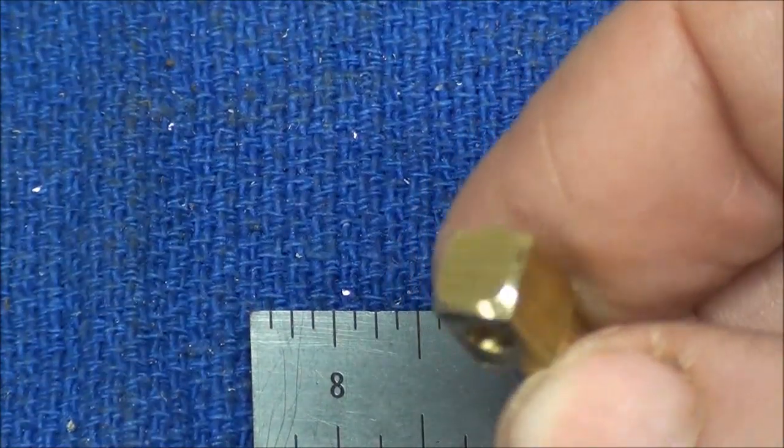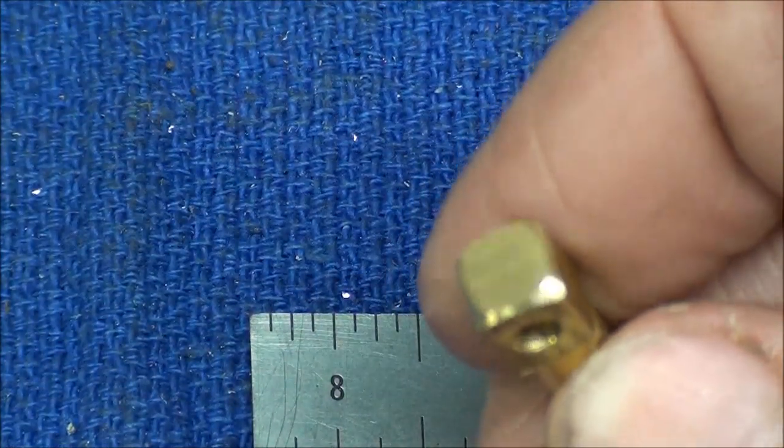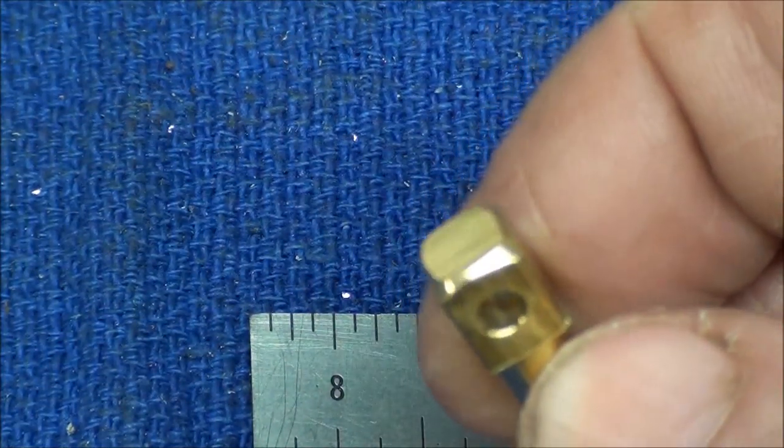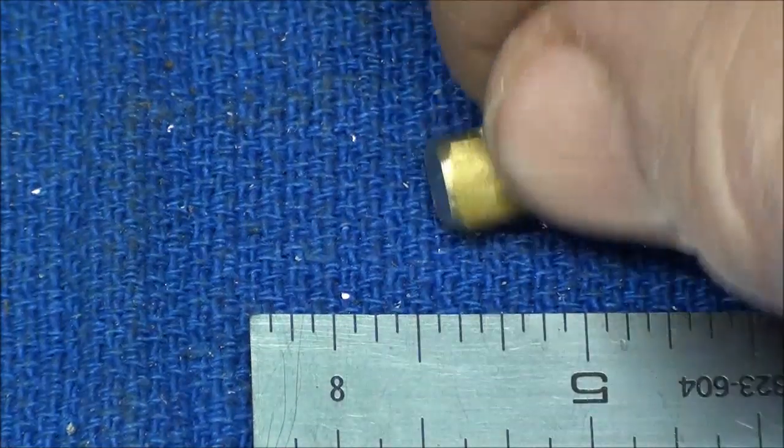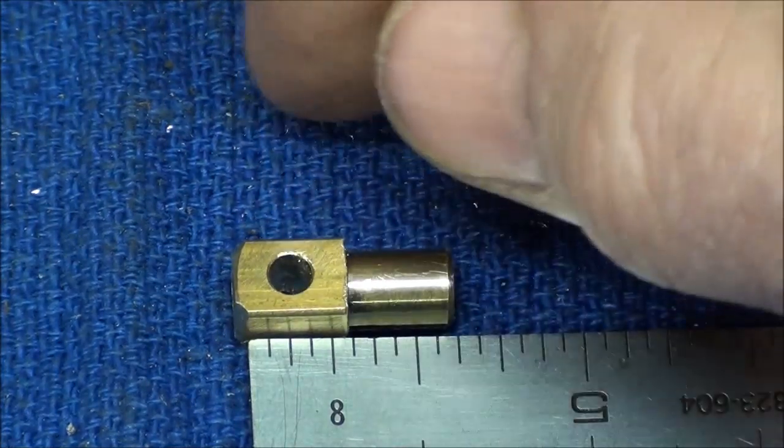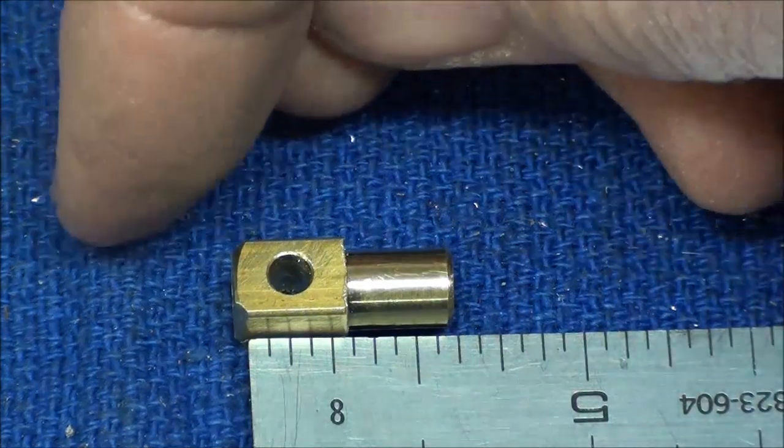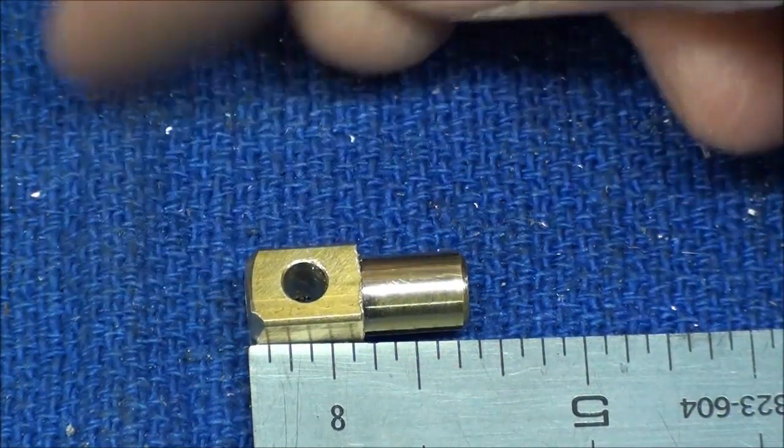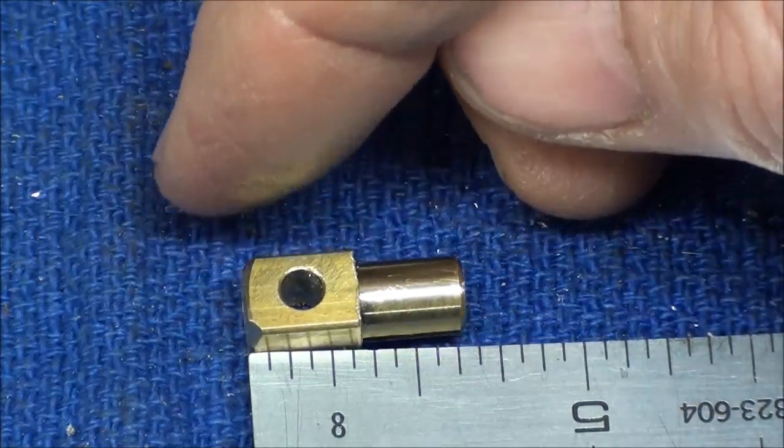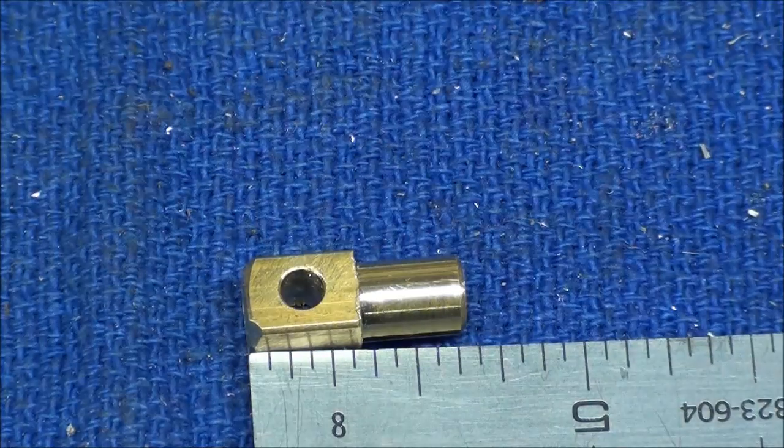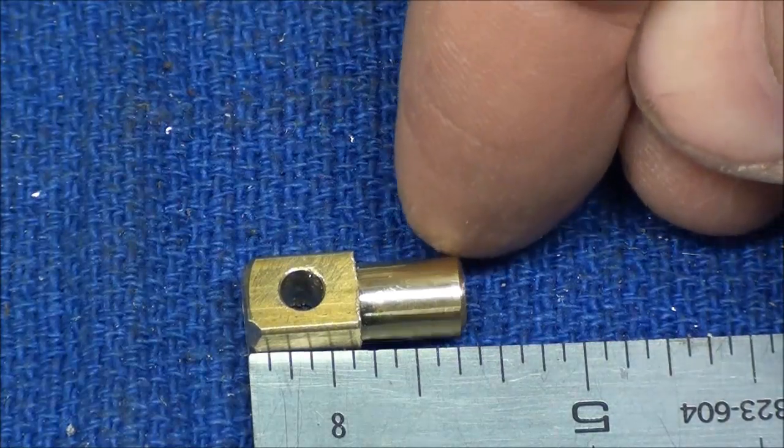I just sanded this end on the little abrasive sander and chamfered the corner a little bit or beveled them. Laying it alongside the ruler now you can see that the overall length is about 5/8 of an inch and the square part is 5/16ths and the turned down part is about 5/16ths.